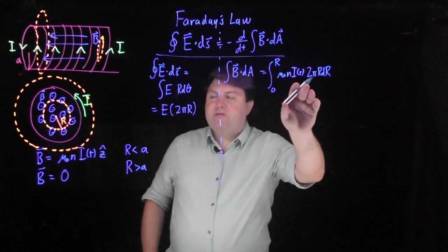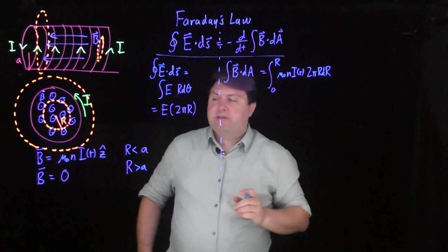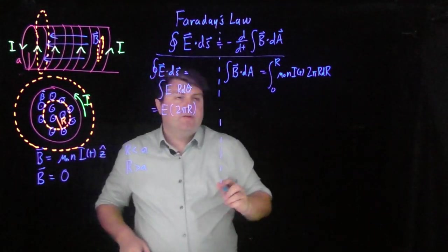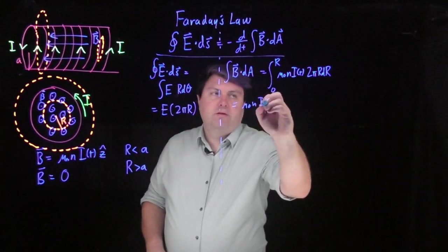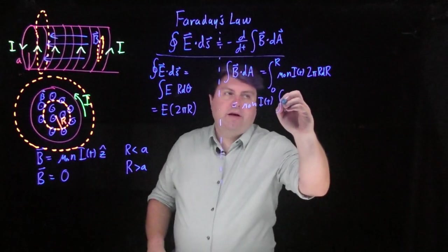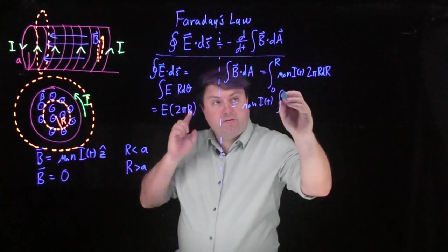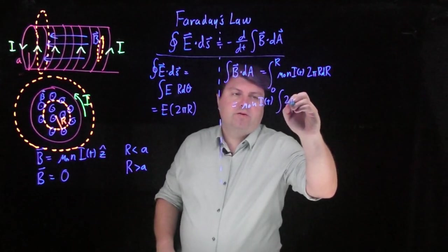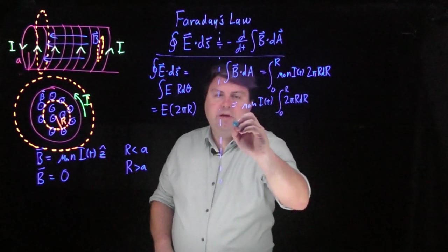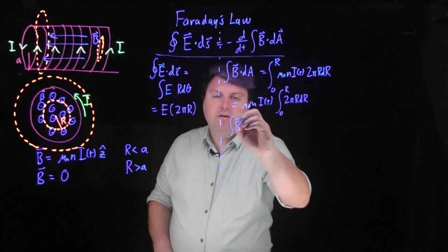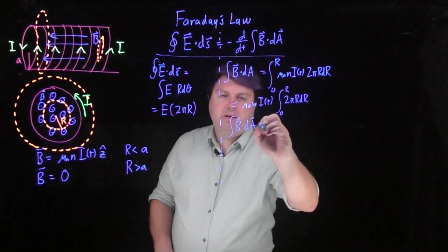So our mu naught n i of t is all constant in space because it's a solenoid, so we can pull it outside of the integral. And so we can just do the integral of dA of a circle. We can also write out the dA of a circle, 2 pi r dr.